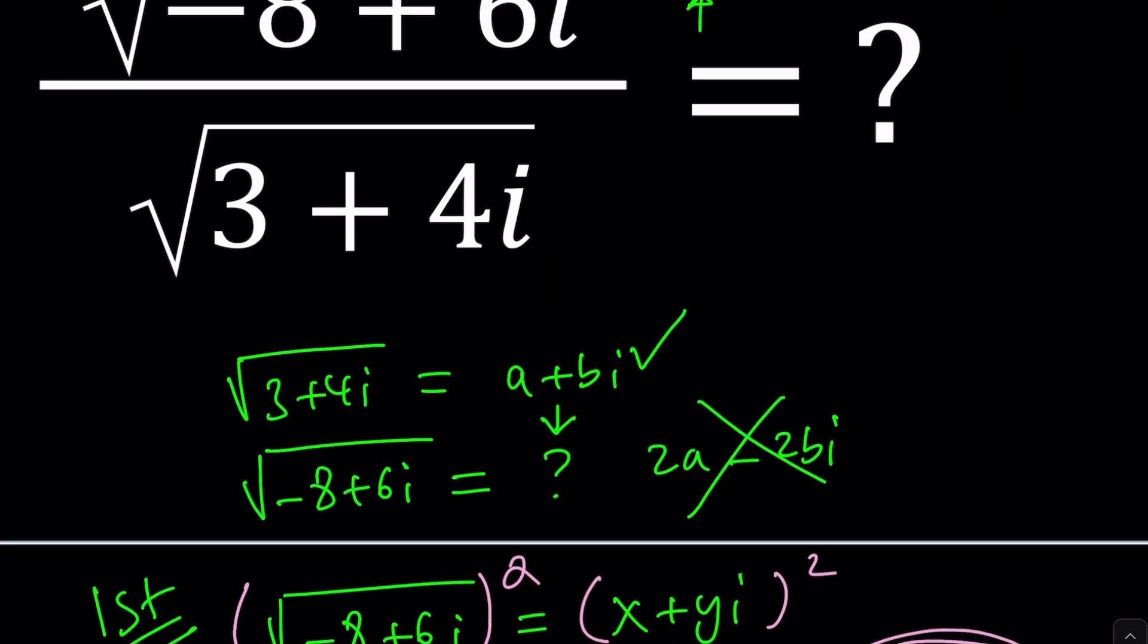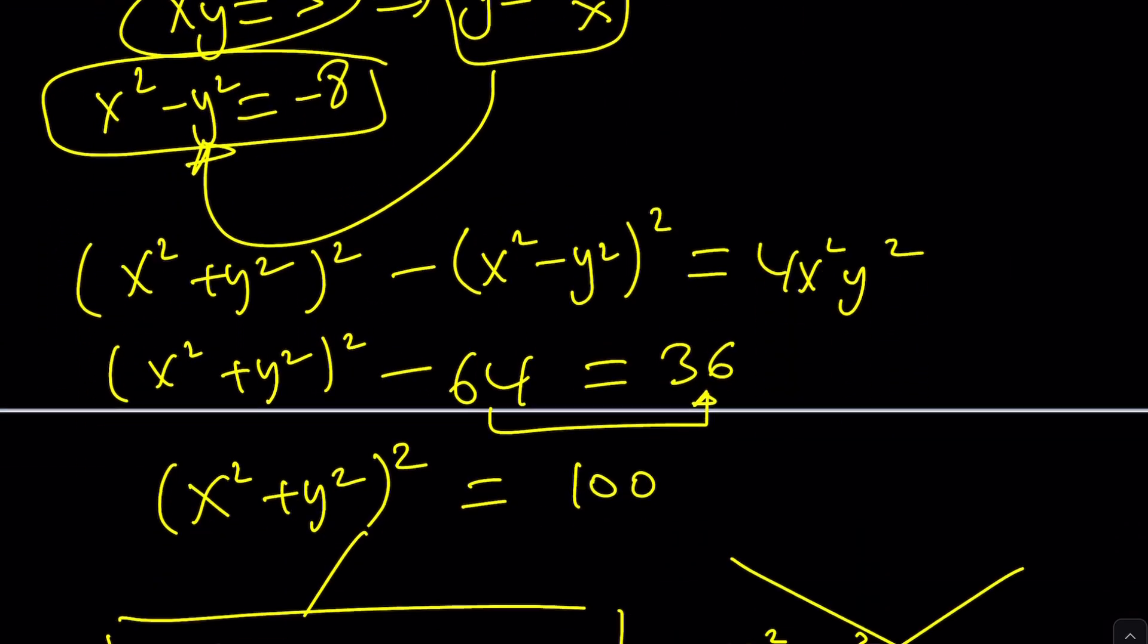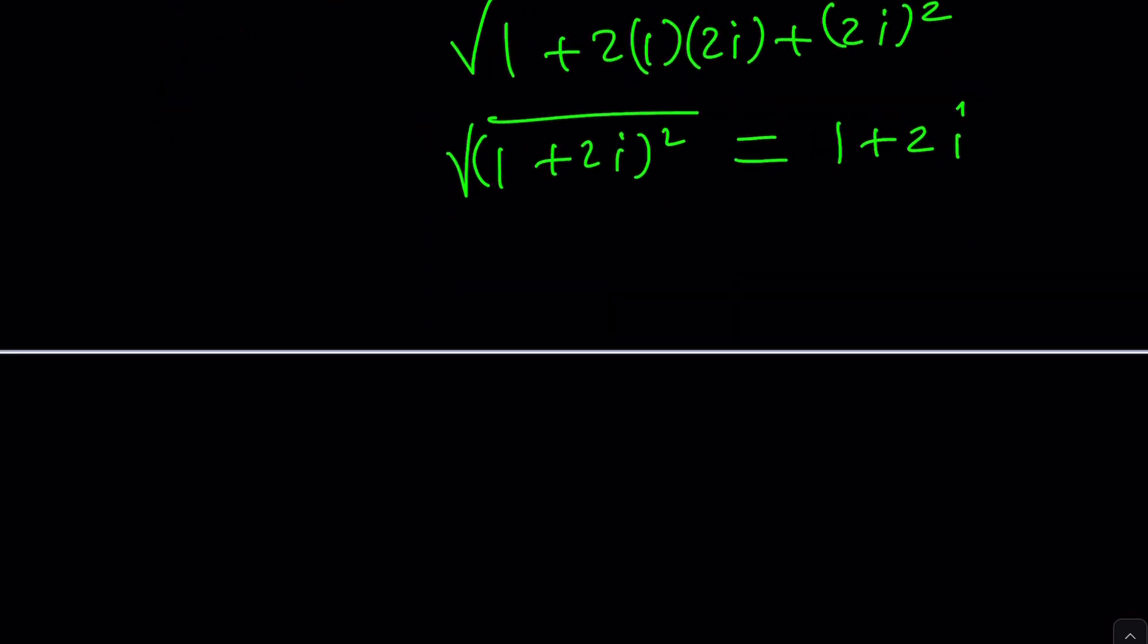Is it supposed to be three plus four i, by the way? Let me check. Yeah, it is supposed to be that way. And negative eight plus six i gave me what? Let me check. One plus three i.